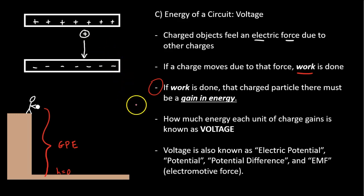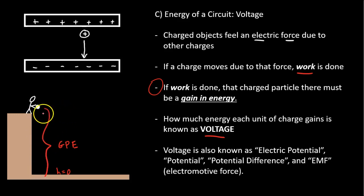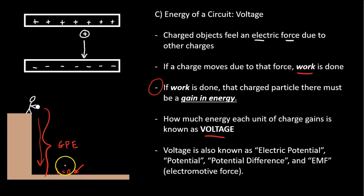We call that gain in energy — that change in energy — voltage. Voltage is how much energy each charge is given. A great way to think about voltage is to compare it to gravitational potential energy. Imagine a person standing on top of a cliff holding a ball and dropping it. Based on their height and the force due to gravity, there's some gravitational potential energy. Relative to the bottom, the ball has some gravitational potential energy. Similarly, this charged object, due to its placement and the electric force, can start moving and therefore has some type of energy. We call how much energy each individual unit of charge has: voltage.